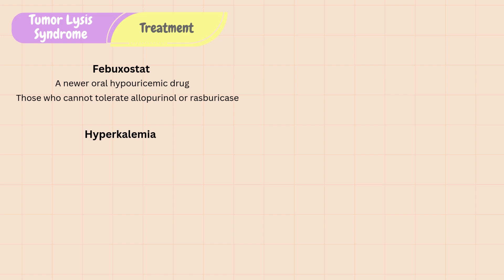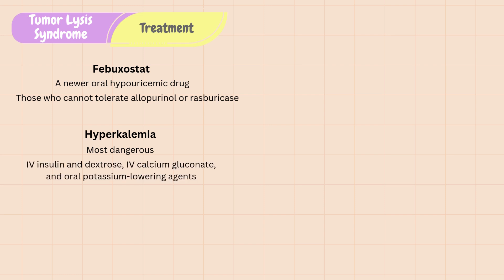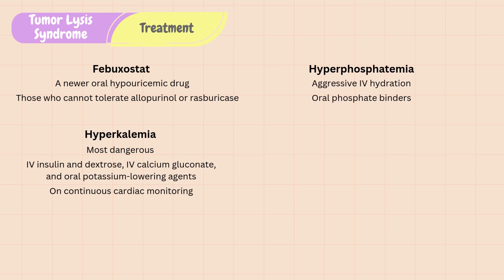For electrolyte imbalance, hyperkalemia is the most dangerous because it can cause deadly cardiac dysrhythmias. Standard hyperkalemia treatment includes giving intravenous insulin and dextrose, intravenous calcium gluconate, and oral potassium-lowering agents such as patiromer and lokelma. Patients should be placed on continuous cardiac monitoring. Hyperphosphatemia can usually be corrected with aggressive IV hydration and oral phosphate binders such as patiromer. Most of the time, after hyperphosphatemia is corrected, hypocalcemia will improve because there is less phosphorus to bind to calcium. Therefore, hyperphosphatemia should be corrected first before considering hypocalcemia treatment, which could make calcium phosphate precipitation worse.